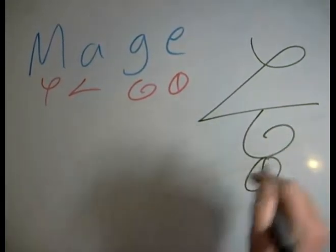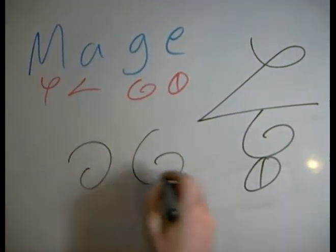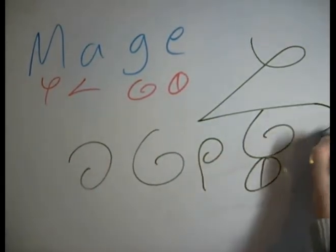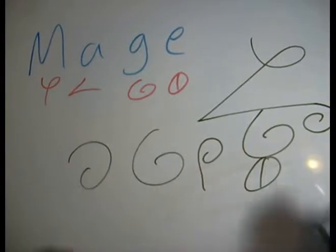Now, two things about the G. First of all, the G is just a curl. Any curl in any direction is a G. Those are all Gs. So there's no reason we couldn't just curl right out of the A curve like so and save ourselves another stroke.